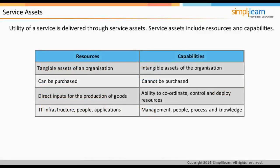Utility of a service is delivered through service assets, which include resources and capabilities. Both are equally important and a service provider cannot exist without them. Resources are the tangible assets of an organization that can be purchased to deliver the service. Capabilities, on the other hand, are the intangible assets of an organization and cannot be purchased, but have to be developed and maintained over a time span. Resources are the direct inputs for production; capabilities have the ability to coordinate, control, and deploy resources to create services.